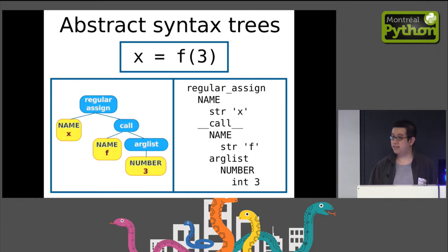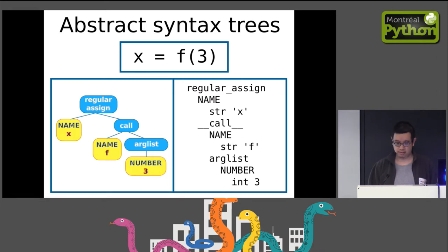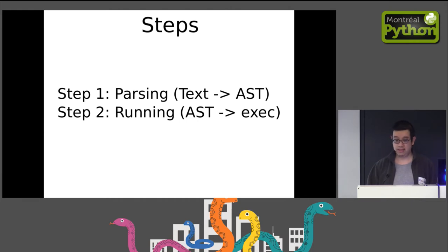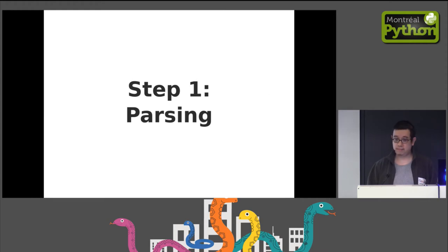An abstract syntax tree is a tree where each node has some kind of name — like regular_assign, call, arg_list, and so on. If you see it in the console during the demo, you'll see the textual representation of that tree. To write our interpreter, we're going to have two steps: first, parsing — turning Python source code into an abstract syntax tree — and second, taking that AST and running the corresponding program.